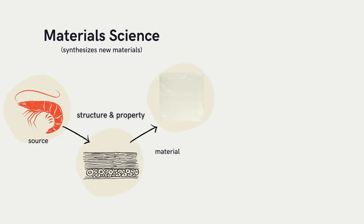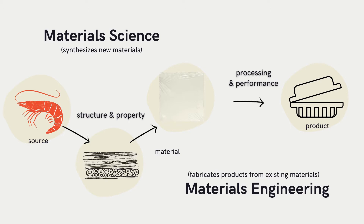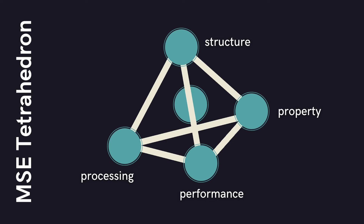Moving on — yes, we have a film, but so what? Is it even useful to us? Thus, we process and test its performance to become a product that is practical and usable to society. As you can see, if you want to make a good product, you have to study the material's structure, property, processing, performance, and characterization. This interrelationship of these components is what you call the Materials Science and Engineering Tetrahedron, or MSE Tetrahedron for short.